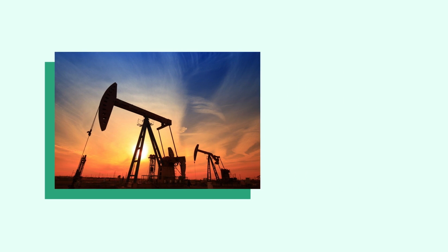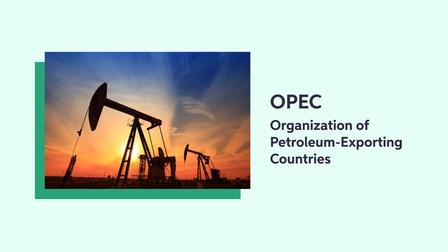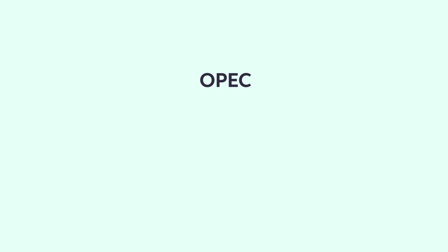Perhaps the most famous and studied case of oligopoly is the OPEC cartel. OPEC is short for Organization of Petroleum Exporting Countries, an intergovernmental organization with the explicit objective of coordinating oil production and sustaining high levels of oil prices. The organization was initially formed in 1960 by five countries: Kuwait, Venezuela, Iran, Iraq, and Saudi Arabia. It now has 13 member states.